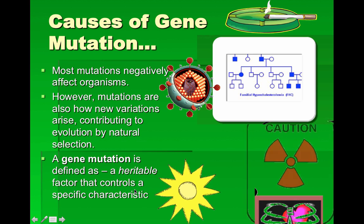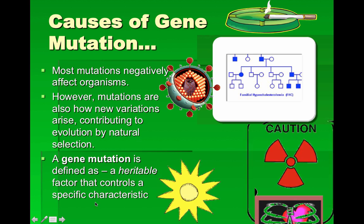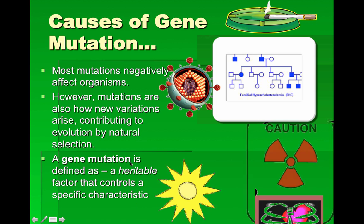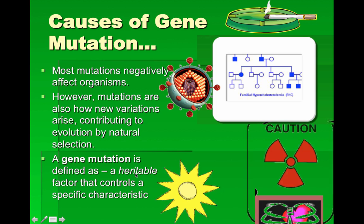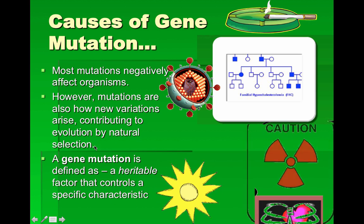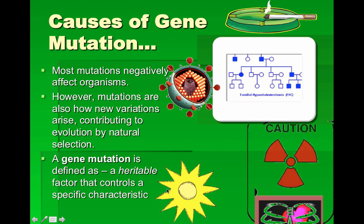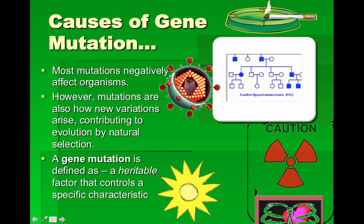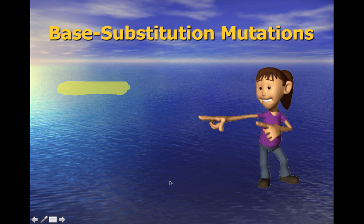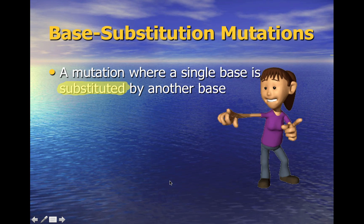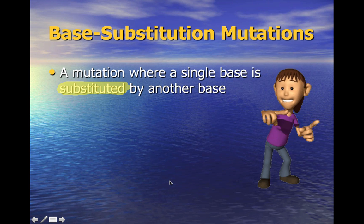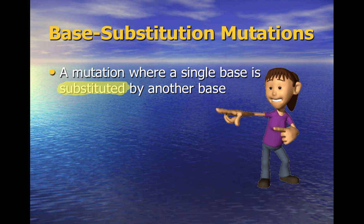A gene is defined as a heritable factor that controls a specific characteristic. A mutation is any kind of alteration in that gene, which can affect that heritable factor.